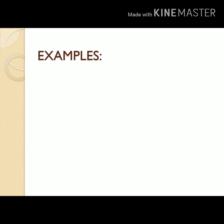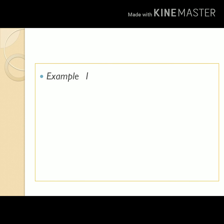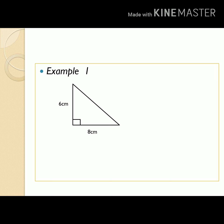Let us look at some examples on how to find the area of a triangle. Example number one: we have a right-angle triangle with dimensions — height 6 centimeters and base 8 centimeters. How can we find the area? The area is one half times base times height. So: one half times 8 cm times 6 cm. Six times 8 is 48, and 48 divided by 2 is 24. The area is 24 square centimeters.